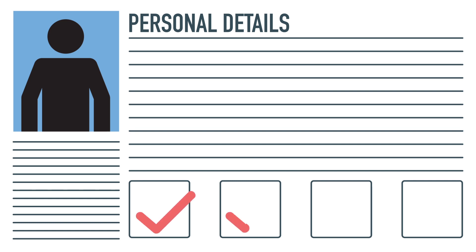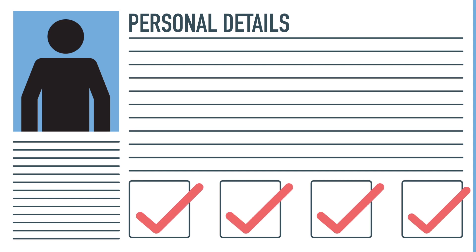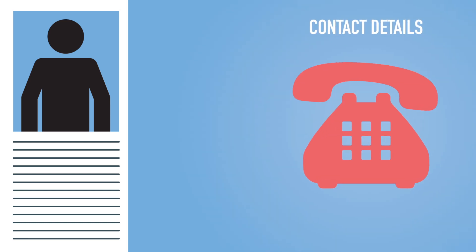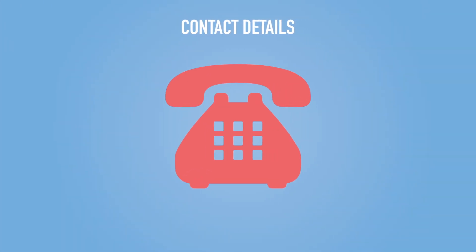Now it's time to start filling in your SACAP application. It starts with the basics. Next is your contact details so that SACAP knows how to reach you. This includes your work and home phone numbers, your physical and postal address.